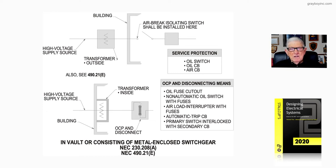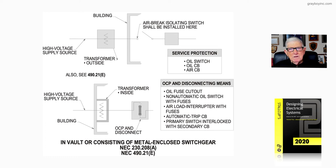This illustration deals with 230.208A of the NEC as well as 490.21E. So basically, figure 17-12 is illustrating where the transformer is outside the building routed to the disconnecting means, or where the transformer is inside the building or in a vault and the secondary conductors are routed to the disconnecting means — whether it be any one of those shown in the boxed-in information for overcurrent protection and disconnecting means. That's what figure 17-12 is illustrating to the user of the NEC.